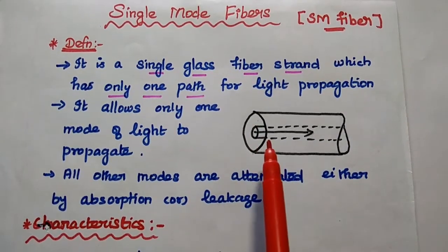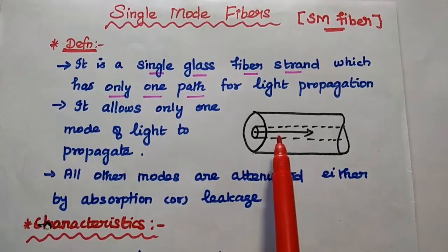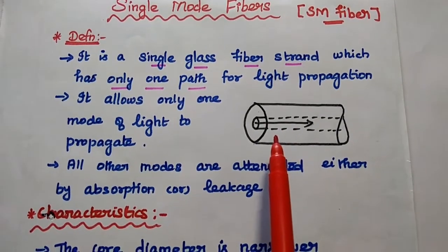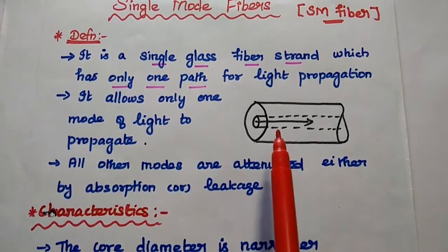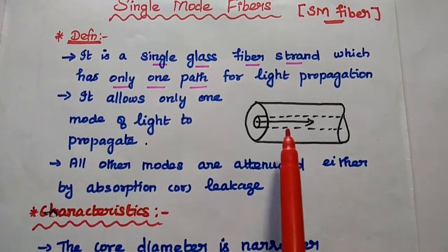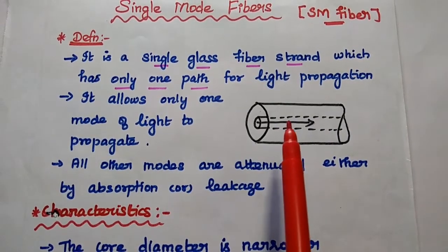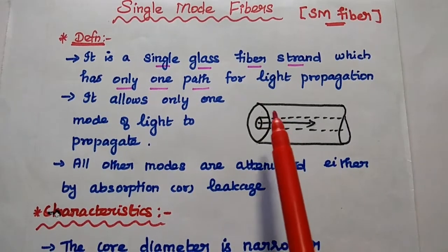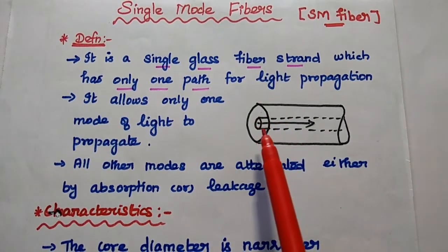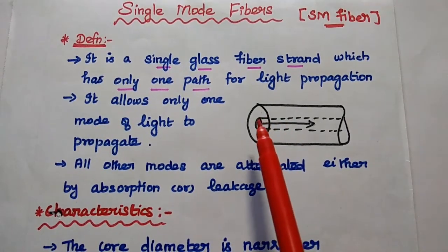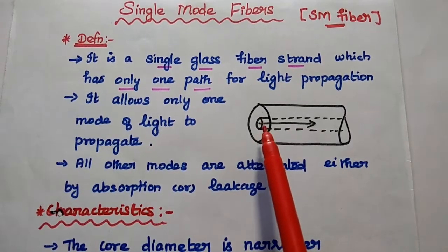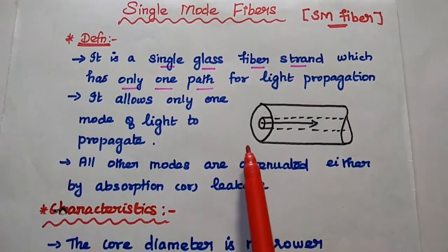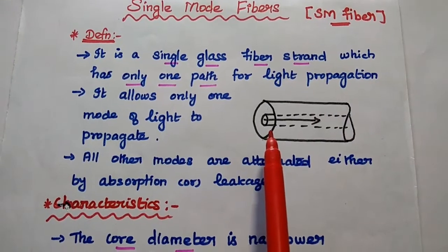It allows only one mode of light to propagate through the fiber. All other modes are attenuated either by absorption or leakage. As shown in this diagram, single mode fiber has a narrower core diameter, and hence it allows only one mode of light to propagate through it.